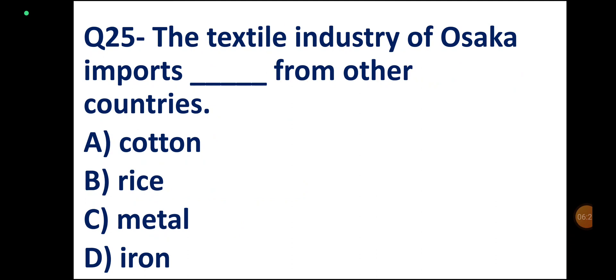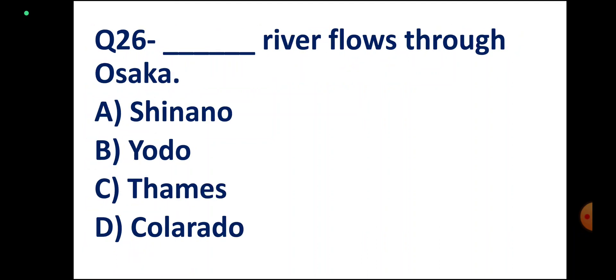Question number 25. The textile industry of Osaka imports DASH from other countries. Options: Cotton, Rice, Metal, Iron. Correct answer: Cotton.